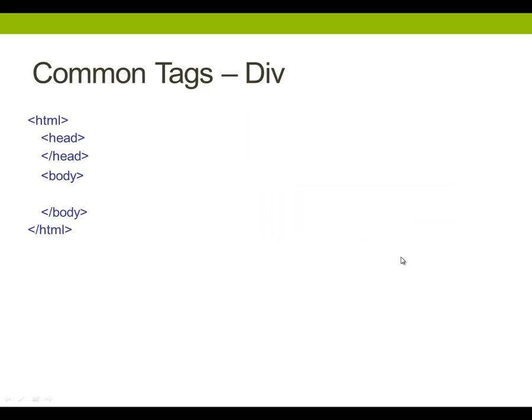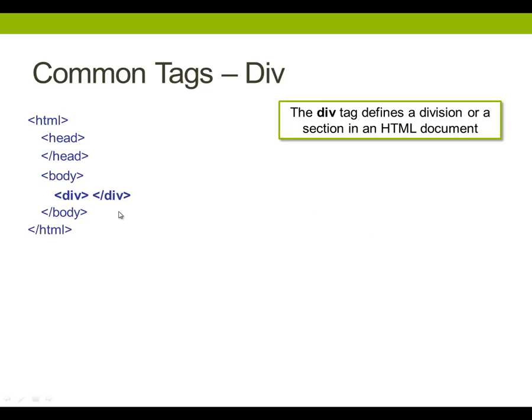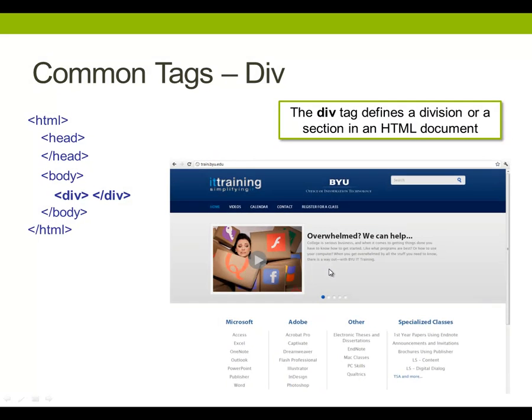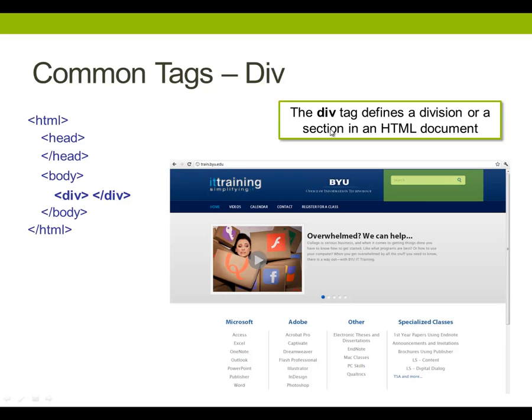So the first tag we're going to talk about that goes inside the body tag is called a div tag, and div stands for division. It divides up your web page, mostly so that you can easily access individual parts of your web page using CSS. That's an example of a div tag right there. These are some examples of div tags in a web page — right here, this opening banner, that is a div, the search bar.